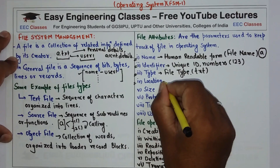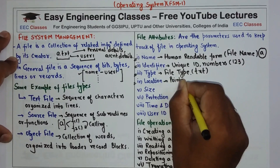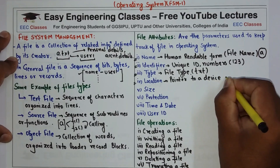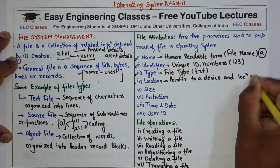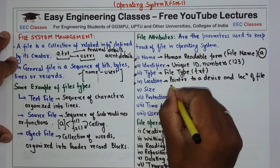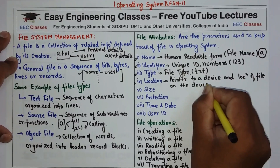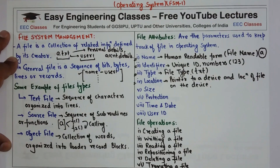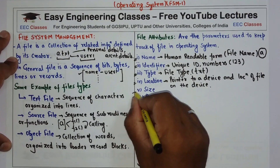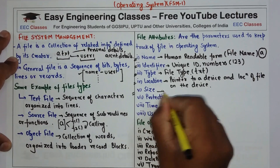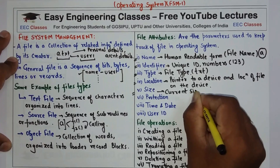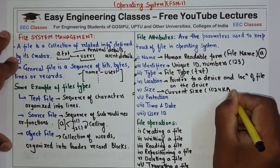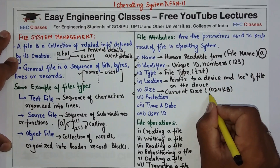The fourth attribute is the location: a pointer to a device and the location of the file on that device. This attribute tells the operating system at which location and on which device the file is stored. The fifth attribute is the size: the current size of the file — for example, 1024 KB tells me the size of file 'a' is 1024 KB.